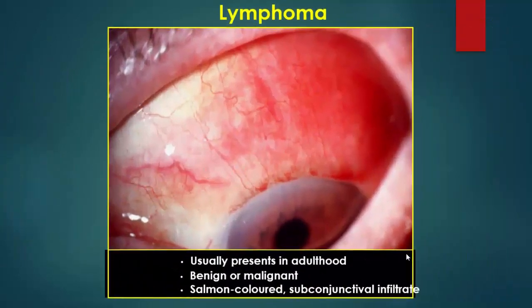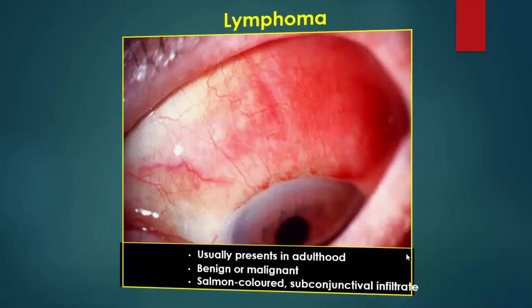Lymphoma usually presents in adulthood and can be benign or malignant. It is salmon-colored and characterized by subconjunctival infiltrates.